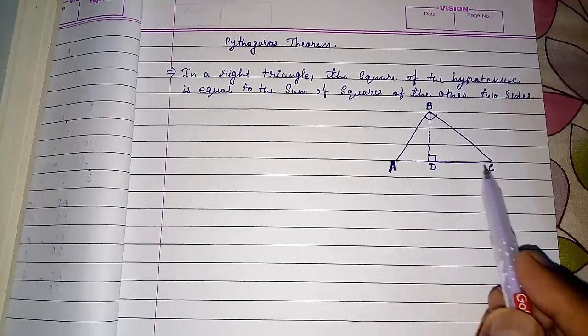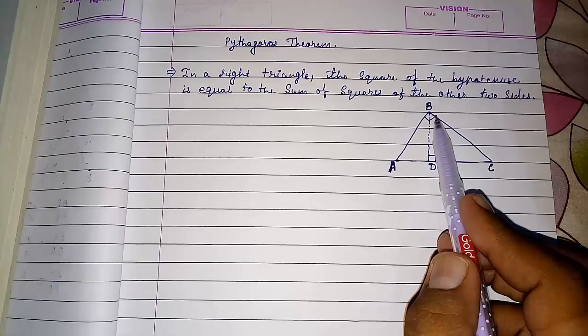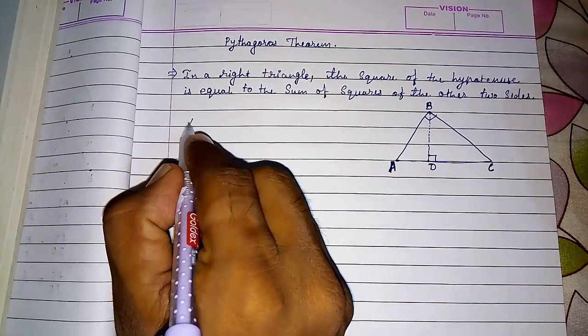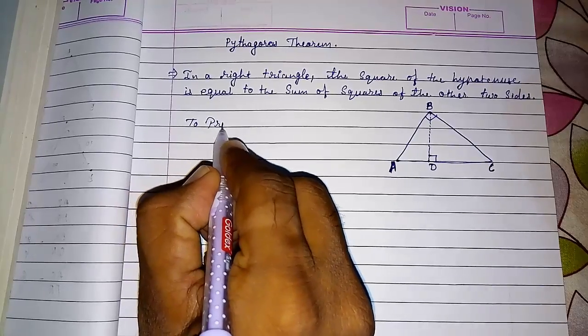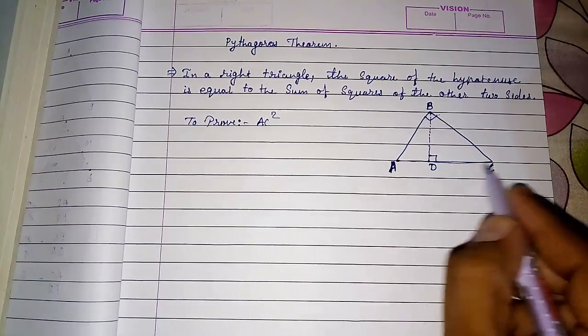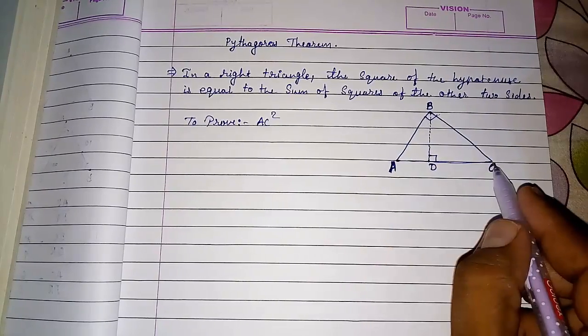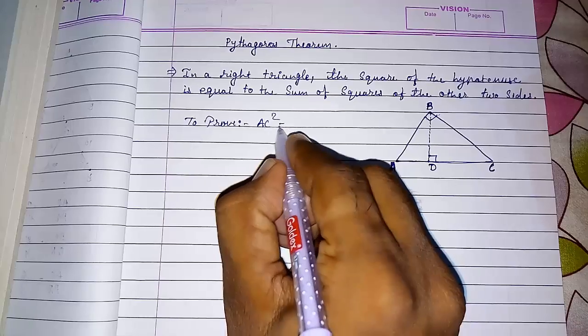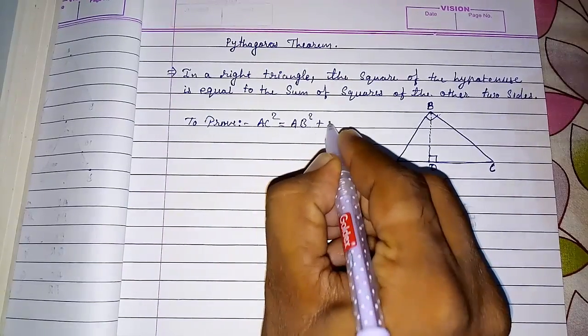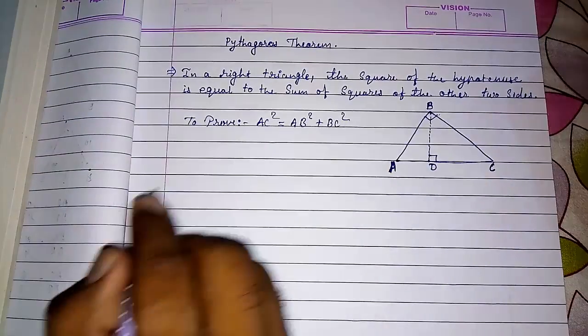We are having a right angle triangle ABC, right angled at B. So our hypotenuse will be AC. To prove: we have to prove that AC square, the hypotenuse of the right angle triangle opposite to the right angle, AC square is equal to AB square plus BC square. We have to prove this.